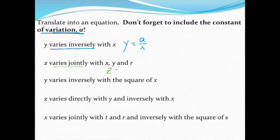Remember, there's always an A. Every single problem will have an A in the constant of variation. And then varying jointly just means times X, times Y, times R. And that can keep going. We can have as many letters as we want with varies jointly. They just keep multiplying.